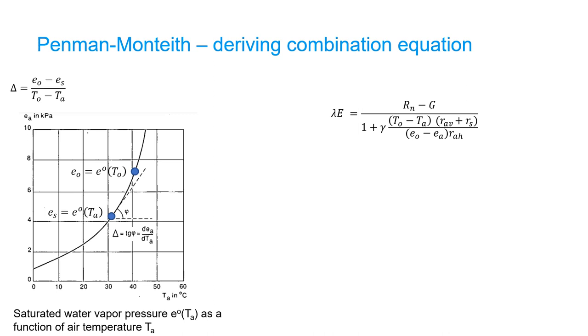Based on this, we can replace the difference between T-node and TA in the combination equation with the following term. Thereby, we remove the need of the surface temperature T-node in this equation.